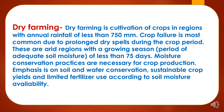What is dry farming? Dry farming is cultivation of crops in regions with annual rainfall of less than 750 mm. Crop failure is most common due to prolonged dry spells during the crop period. These are arid regions with a growing season of less than 75 days with adequate soil moisture availability. Moisture conservation practices are necessary for crop production. Emphasis is on soil and water conservation, sustainable crop yields, and limited fertilizer use according to soil moisture availability.